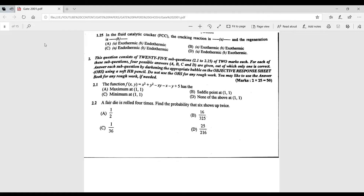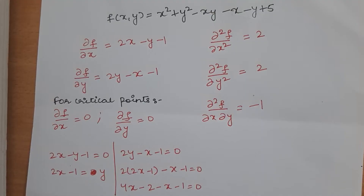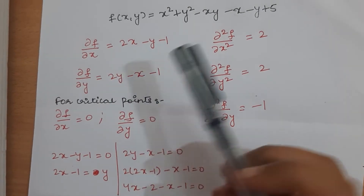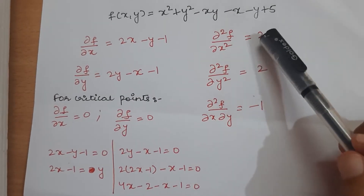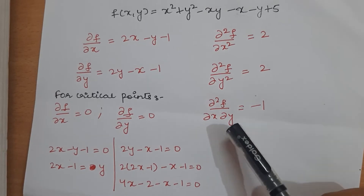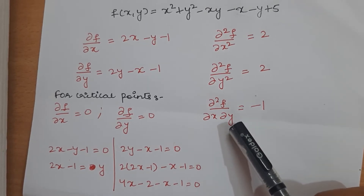Question 2.1: the given function has a maximum or minimum at what point? We must specify the conditions. This is a multivariable problem. You need to find the first-order partial derivatives with respect to x and y, the second-order derivatives with respect to x and y, and the mixed second-order derivative of x with respect to y.